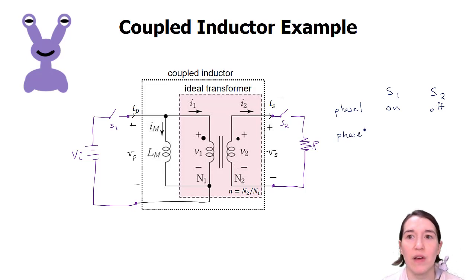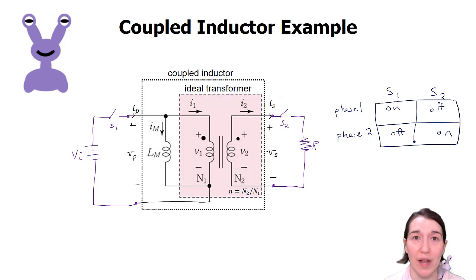So during phase one, we have S1 is on and S2 is off. And then we're going to have phase two where we're going to switch them. So S1 will be off and S2 will be on. So we're just going to do those two simple phases. And let's look at each of those diagrams.